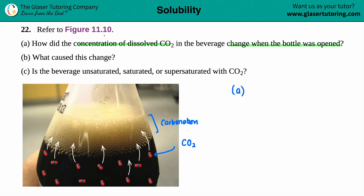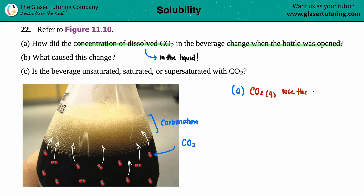So now for letter A — how did the concentration of dissolved CO2 change? If something is dissolved, it is in the liquid, in this case the cola. But once you open that bottle, the majority of the CO2 is rising to the top. When the bottle was opened, the CO2 rose to the top to form the carbonation. Matter cannot be created nor destroyed, so the CO2 that was in the liquid is now coming out of the liquid and sitting on top — it's all gas.